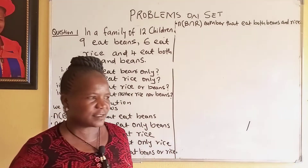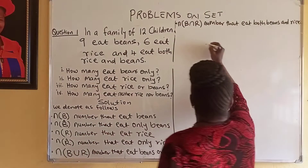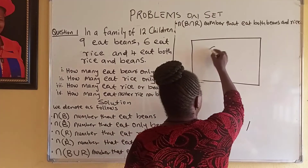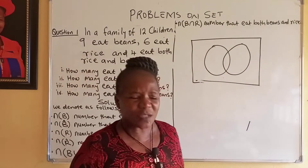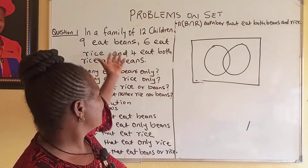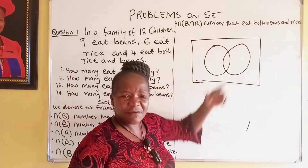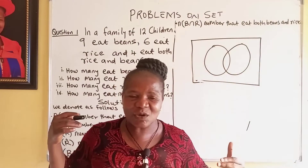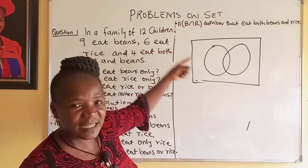Now, how do we solve this? Let us first represent it in a Venn diagram. What calls for the intersection? What calls for it is the question — the way the question is phrased tells you that something is in the intersection. Even if nothing is there, there is no problem; it will be empty. But as it is now, it shows that something is there.